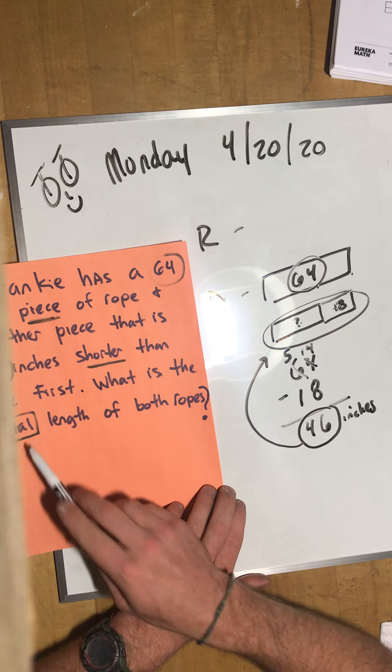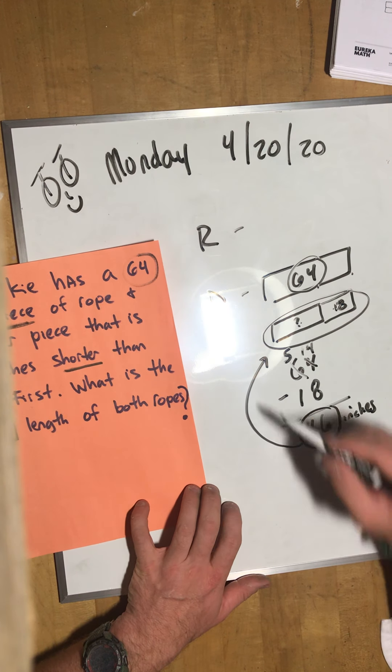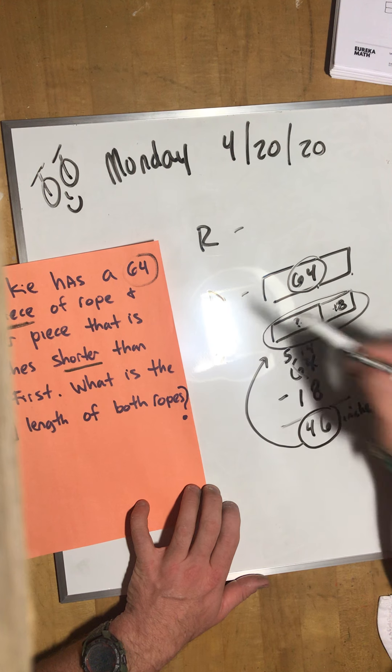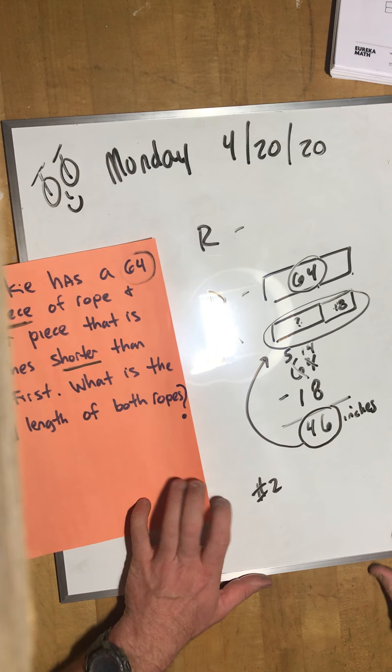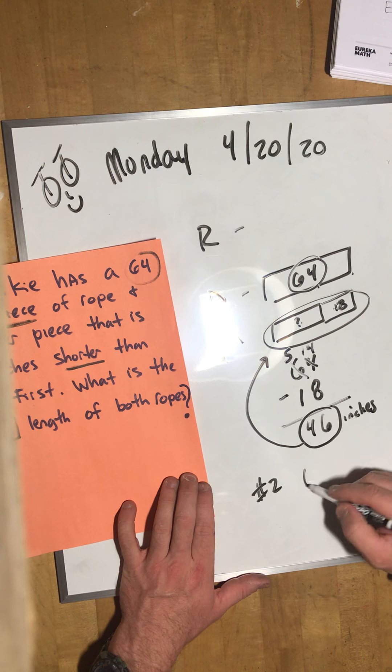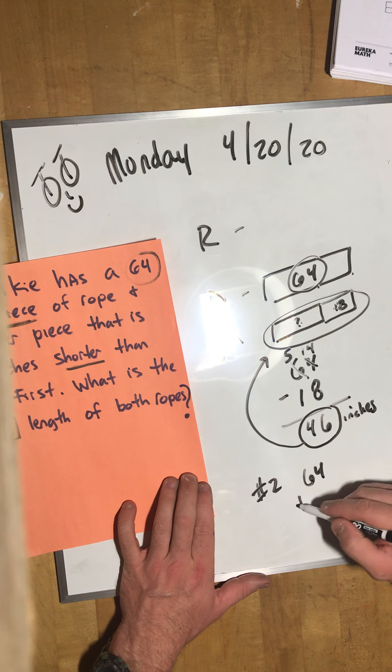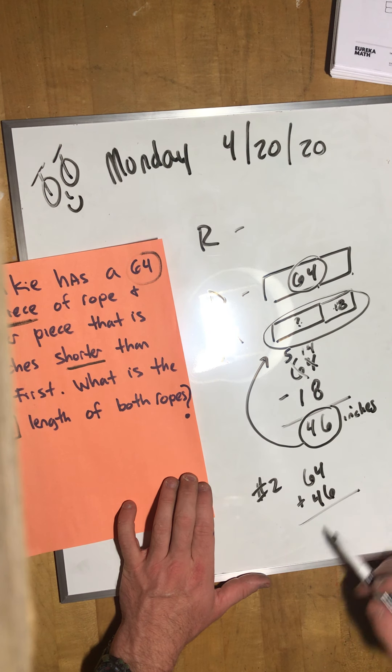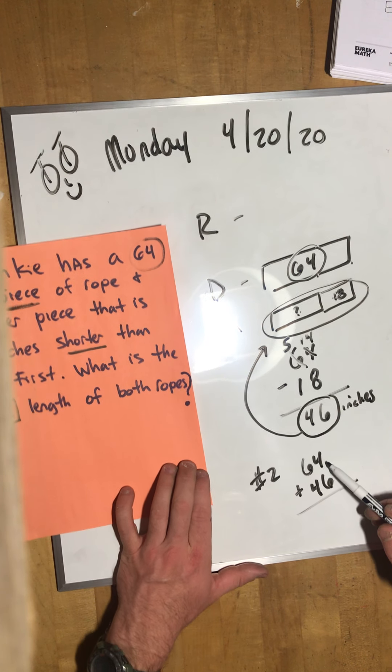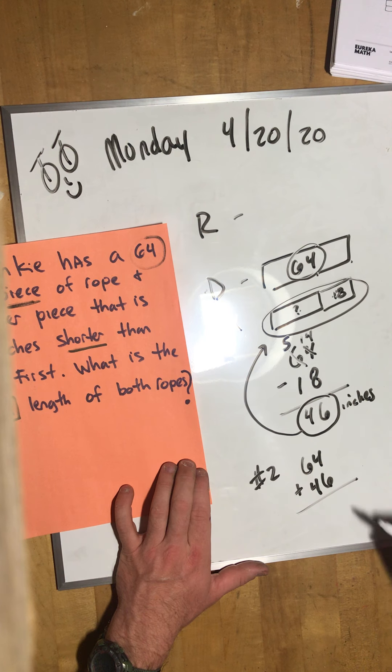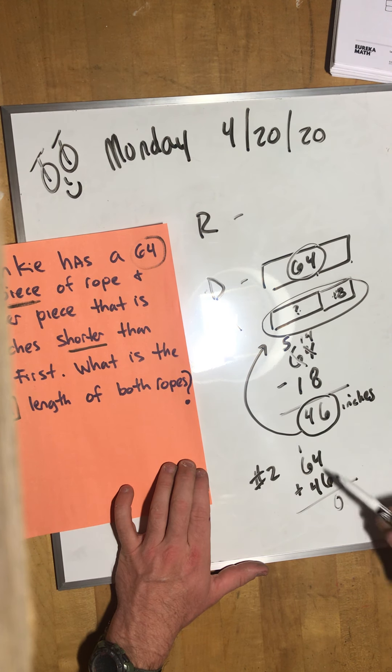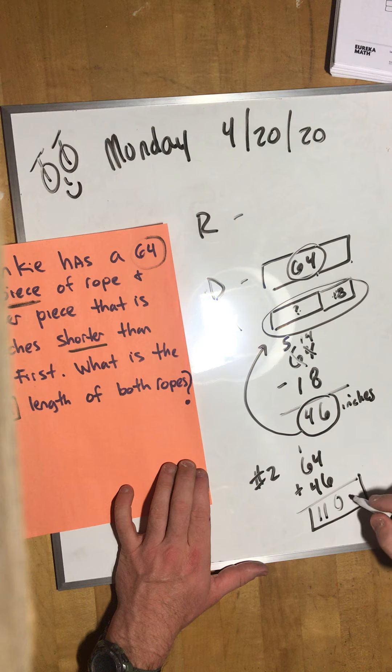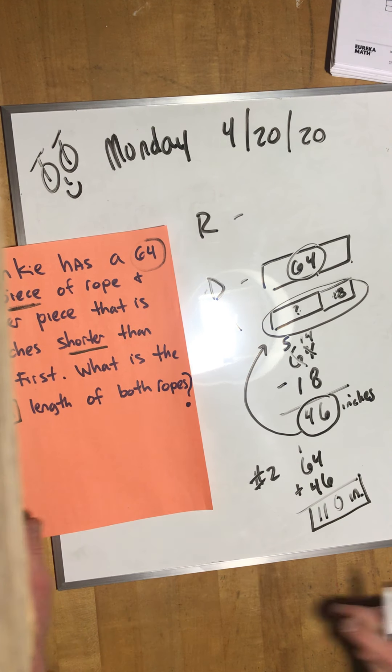So now I know my second piece is 46 inches. Let's add these both together because what is the total length? That was the first step. We need to do the second step. 64 plus 46. Start with the ones. 4 ones plus 6 ones is 10 ones.